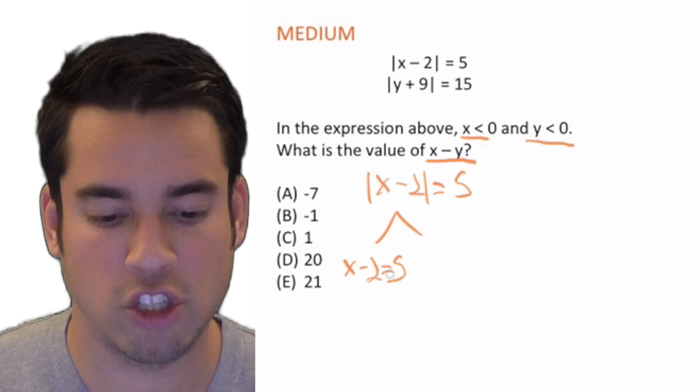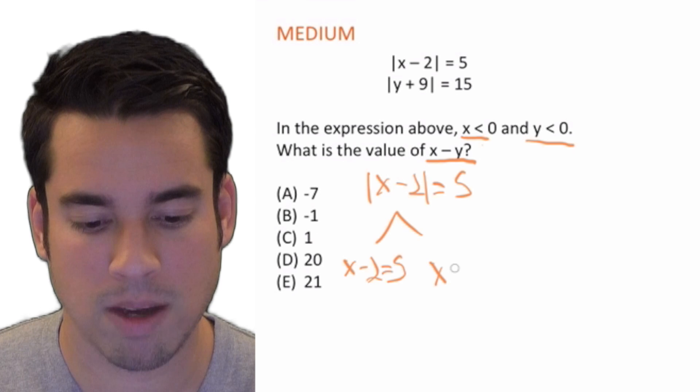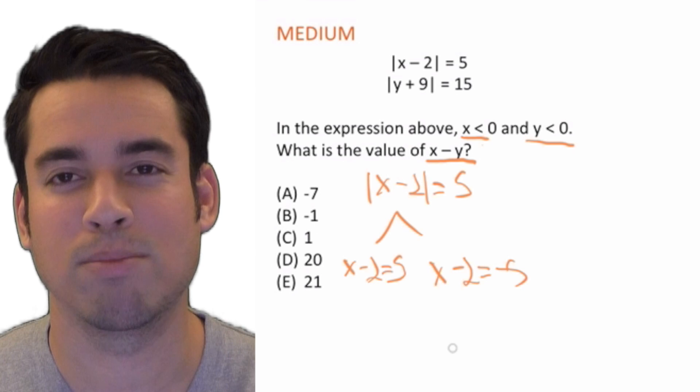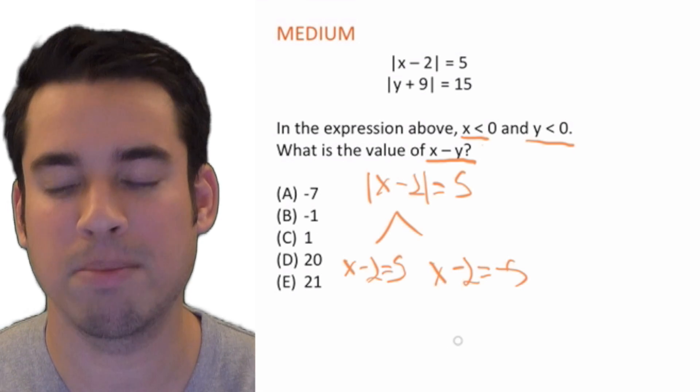Where we make whatever number you have outside of the absolute value, you flip the sign. So we simply solve this by adding 2 to both sides.